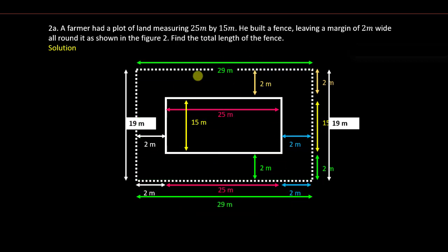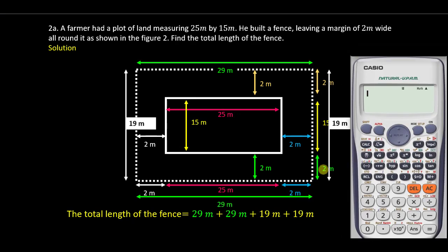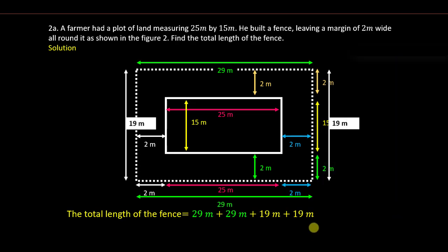Now we have all four sides, so we can calculate the total length of the fence. The total length is simply 29 meters plus 29 meters plus 19 meters plus 19 meters. Use your calculator — in an examination, always verify your answers with the calculator. So 29 plus 29 plus 19 plus 19 equals 96. The total length of the fence is 96 meters.